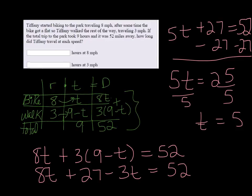So that means that she biked for five hours at eight miles per hour, and nine minus that would be four, so she did four hours of walking.